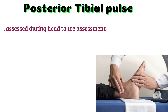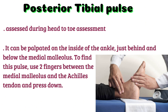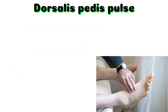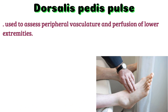Posterior tibial pulse: this pulse point, along with the dorsalis pedis, is assessed during the head-to-toe assessment and is particularly important in patients who have peripheral vascular disease or have had a vascular procedure. It can be palpated on the inside of the ankle, just behind and below the medial malleolus. Use two fingers between the medial malleolus and the Achilles tendon and press down. This is an important pulse point to evaluate peripheral perfusion.